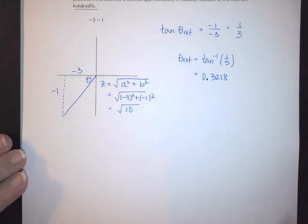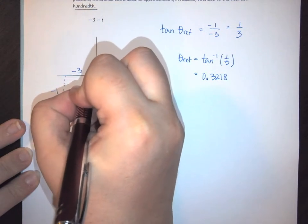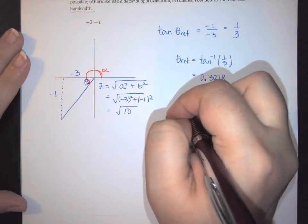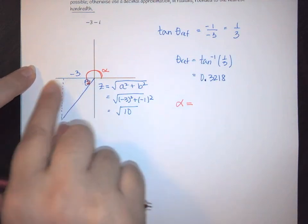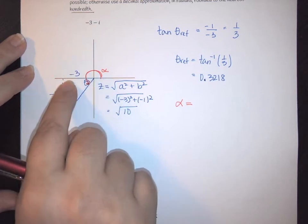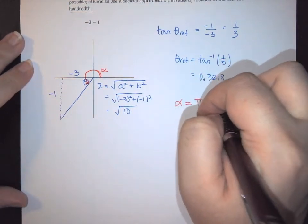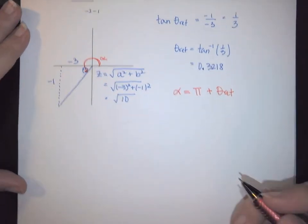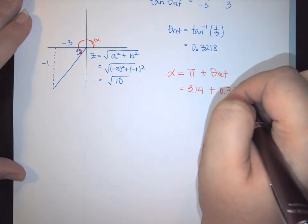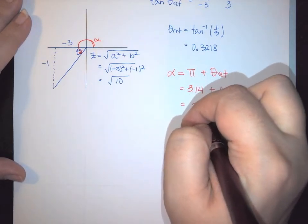Now we need to be able to find the actual angle — let's call that angle alpha. To find alpha we need to remember the reference rule when we're in the third quadrant. The third quadrant says that you're going to take 180 and add your reference. Well 180 is the same as pi, so this is going to be pi plus your angle of reference. So here we're going to use 3.14 plus 0.3218, which gives us an angle of 3.46.